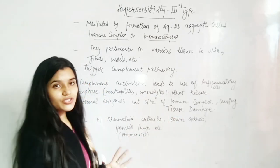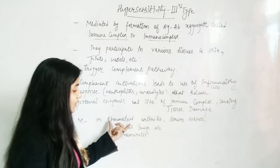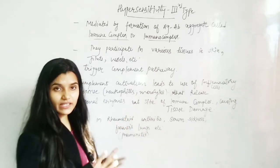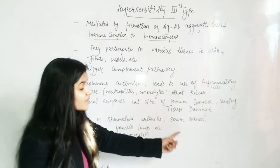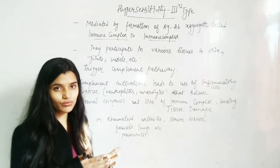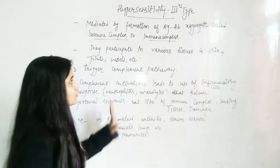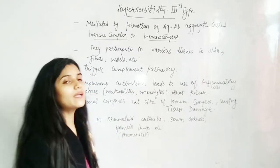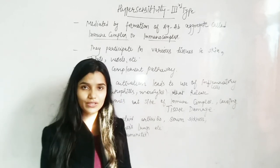For example, after type 3 reactions, you can see diseases like rheumatoid arthritis which causes joint inflammation, serum sickness, and farmer's lung which causes pneumonia-like symptoms or bronchitis. So these symptoms can happen in hypersensitivity reaction type 3. Thank you for watching the video.